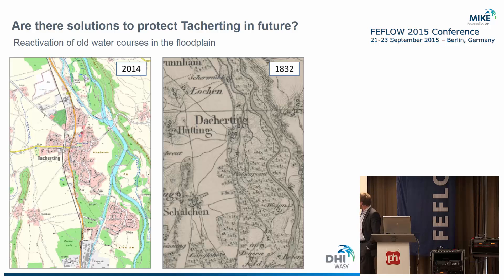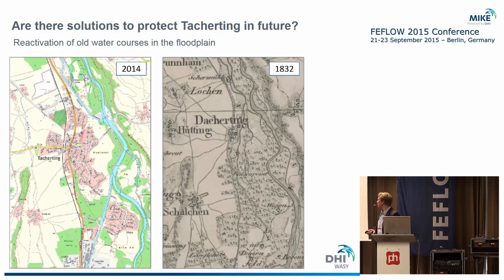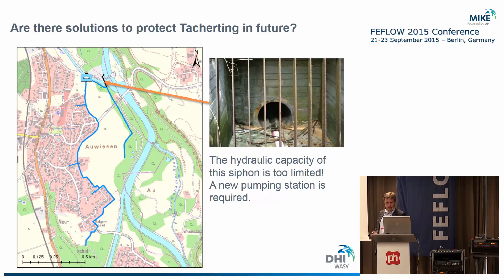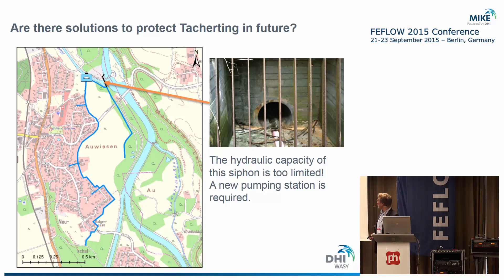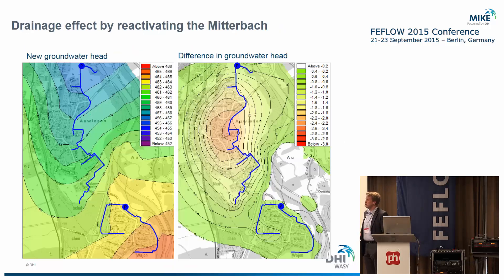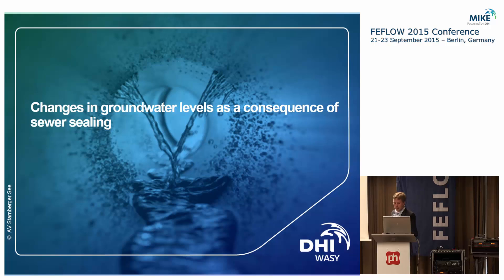Checking historical maps revealed that a small river called the Mitterbach once ran through where the settlement now stands. This river is nowadays completely closed and dry. The simplest solution was to restore it. While we could not route it directly through the village, we redirected it to the right side. It was connected via a small siphon which was too limited in capacity, so we planned a new pumping station. This can significantly reduce high groundwater levels during extreme events. The same approach was applied for another village downstream.